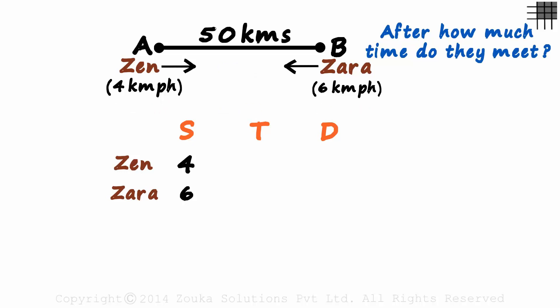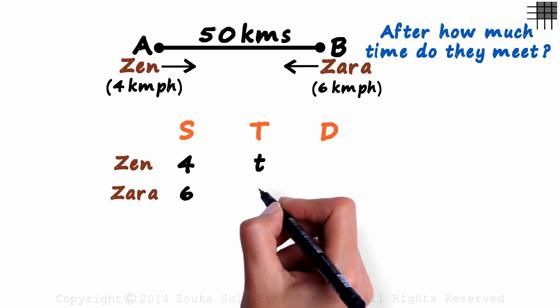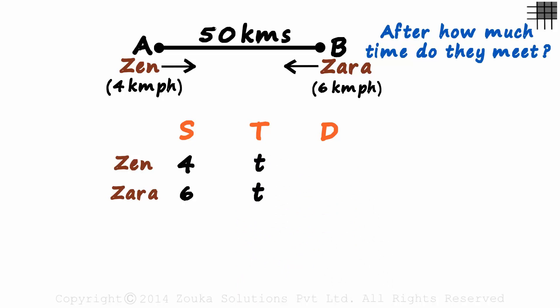Let's assume they meet after T hours, so we write T for each. Now do we know the distance that each one will travel until the point they meet? No we don't. We haven't been provided with the individual distances.